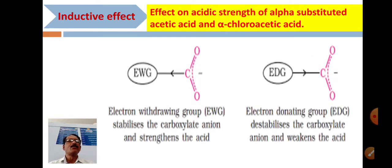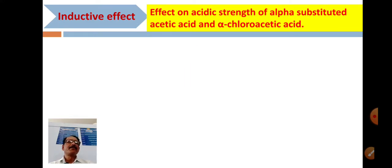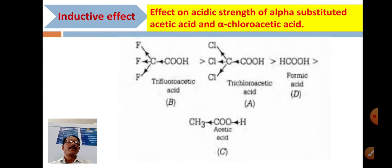How do electron-withdrawing and electron-donating groups stabilize the ion? For example, formic acid has relatively low acidity. Compare formic acid, trichloroacetic acid, and trifluoroacetic acid.